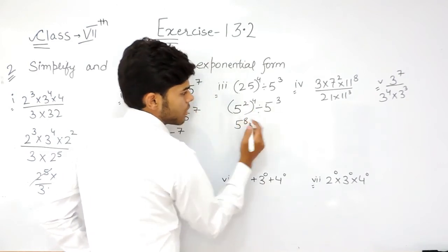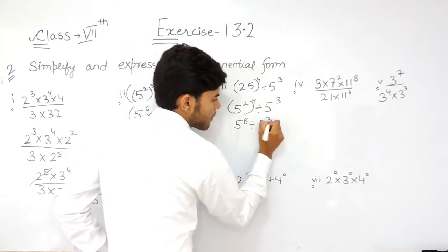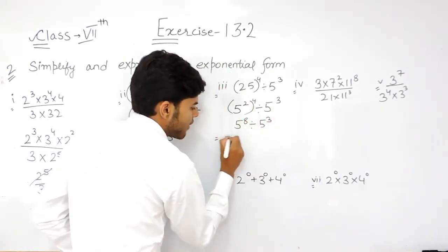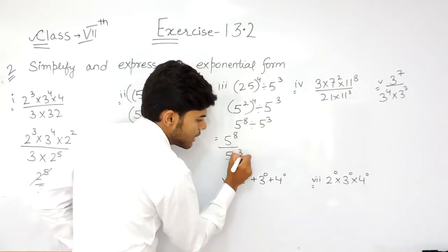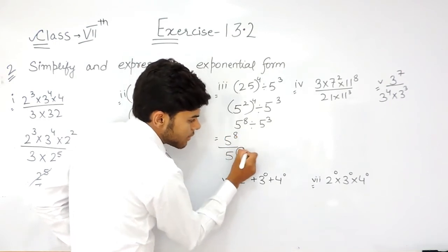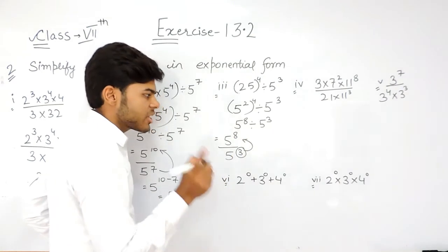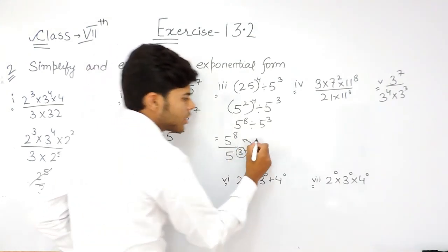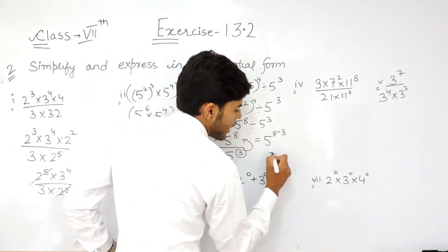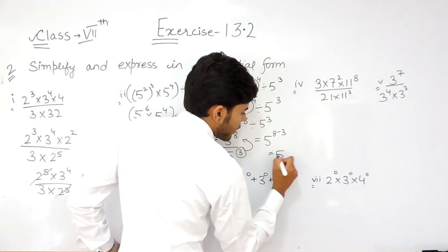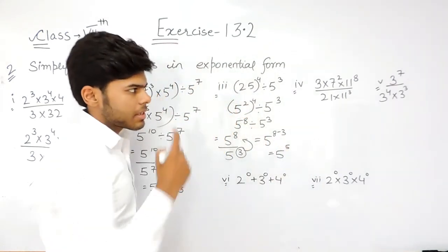4 into 2, divided by 5 to the power 3. So it will be 5 to the power 8 upon 5 to the power 3. This term will go in the numerator, it will change its sign. So it will be 5 to the power 8 minus 3, and that will be 5 to the power 5. So this is the answer.